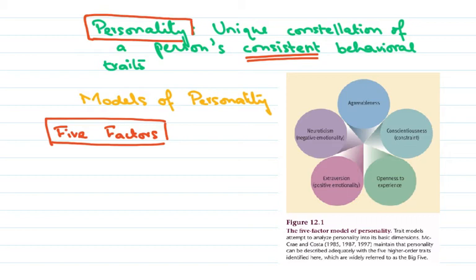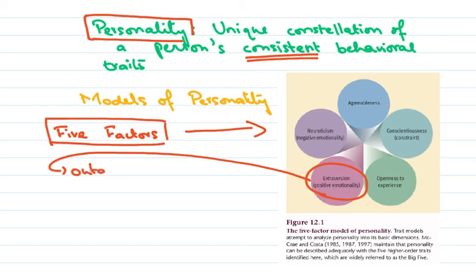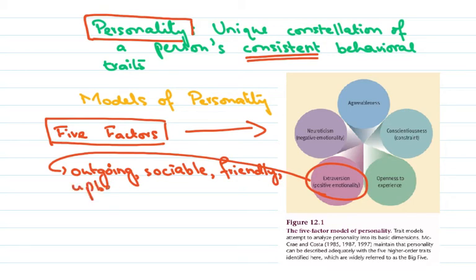Now let's look at what these five factors are. In this diagram you see these five factors laid out. The first factor is something we call extroversion, which is also known as positive emotionality. How do we define extroversion? Individuals who score high in this trait tend to be outgoing, sociable, upbeat. People who score high on extroversion tend to be outgoing, sociable, friendly, and upbeat.